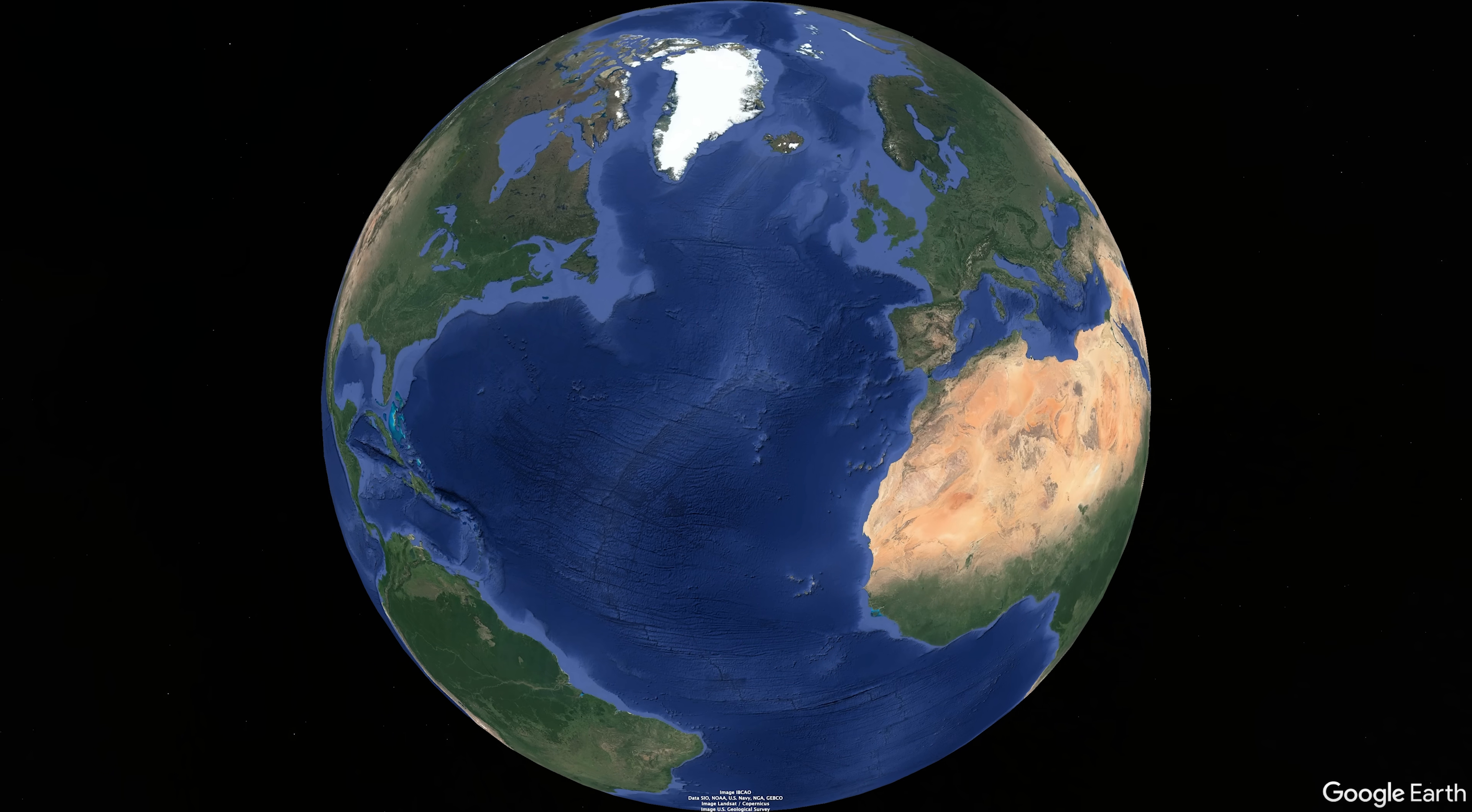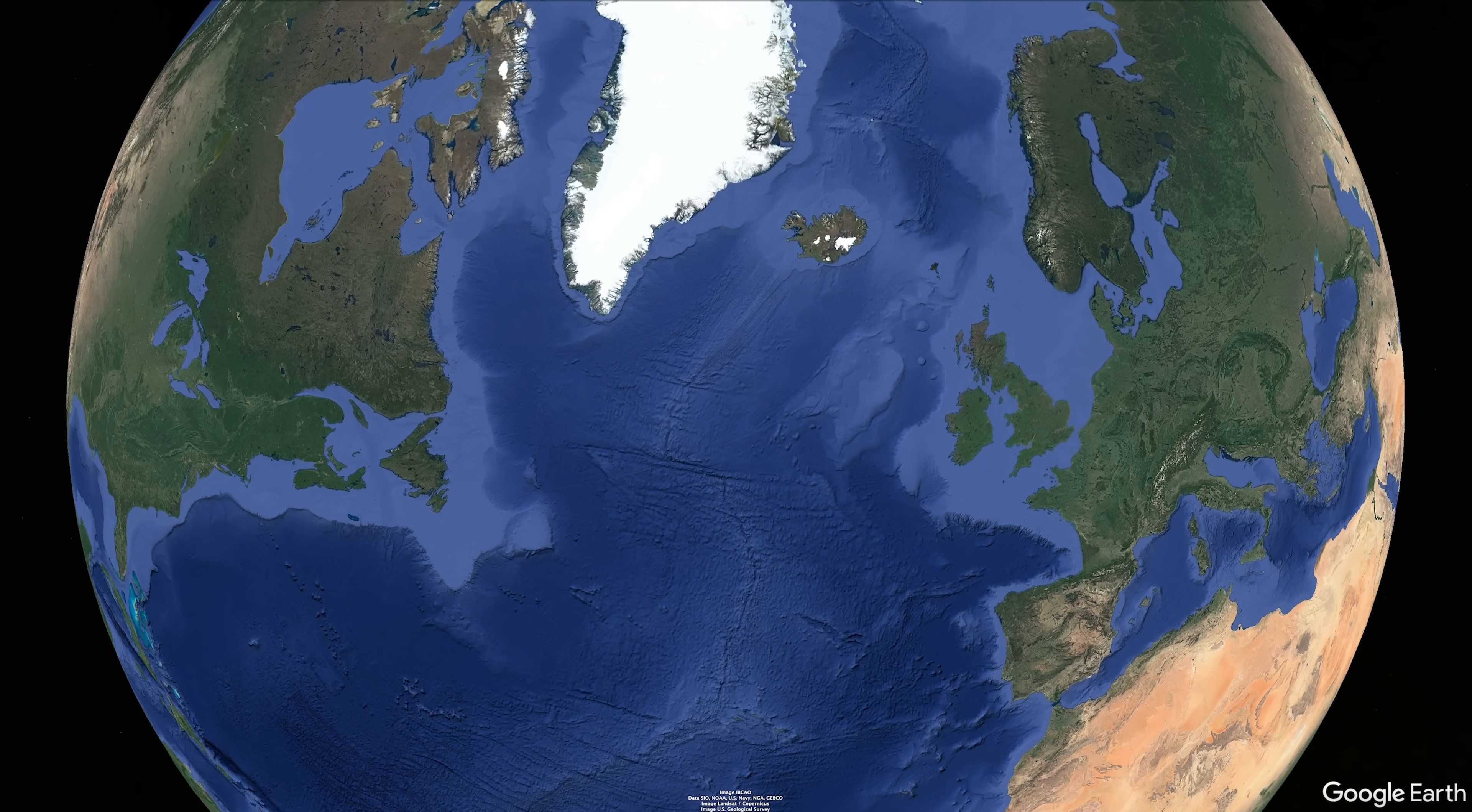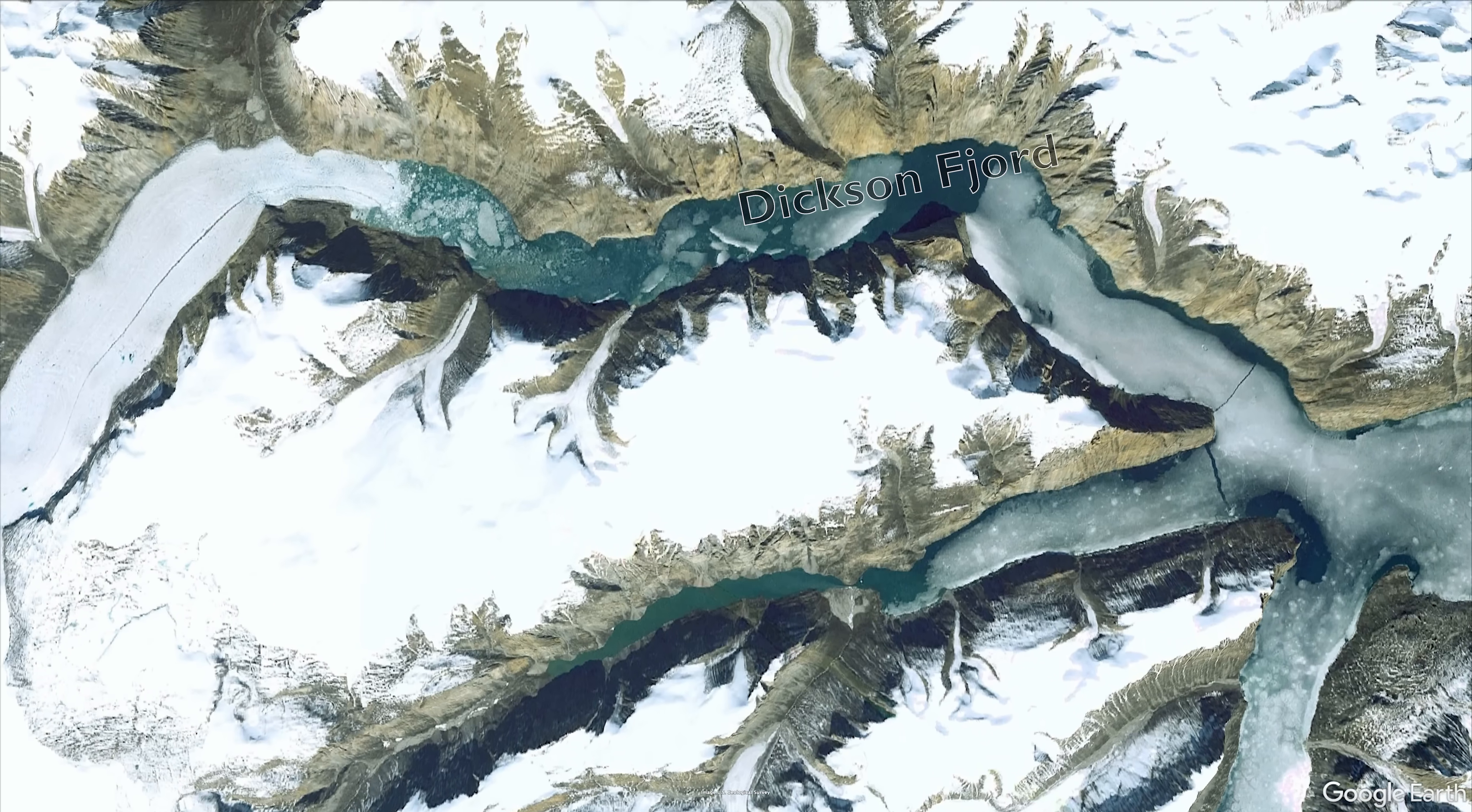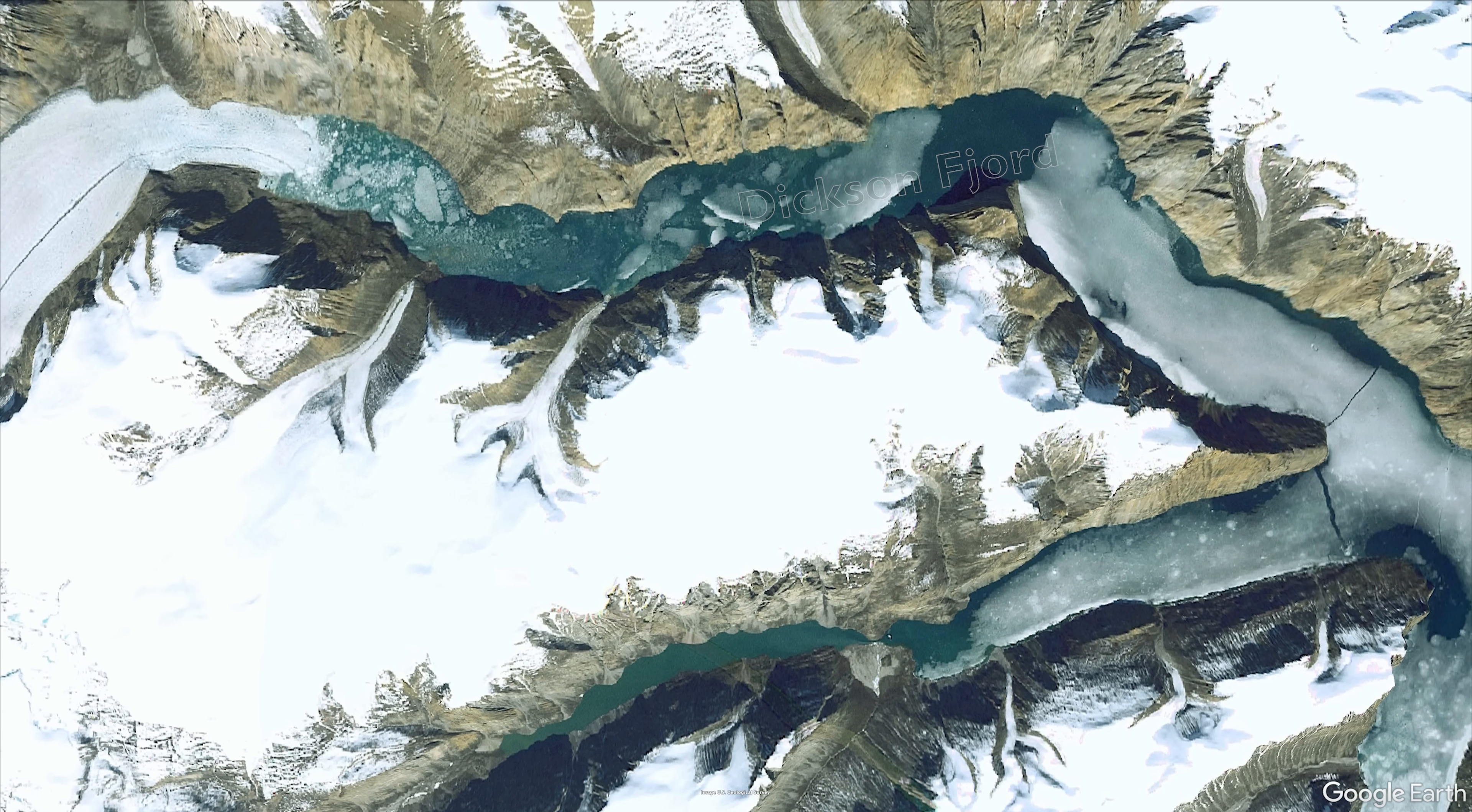So where exactly in Greenland did this strange seismic signal come from? It came from the remote and uninhabited Dixon Fjord, part of a twisting branching network of fjords, some 200 kilometers inland from the open ocean.